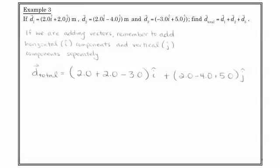So, in this case, my total displacement vector is 2 i-hat plus 2 i-hat minus 3 i-hat, and we kind of sandwich those together, 2 j-hat minus 4 j-hat plus 5 j-hat, and we sandwich those together. And so, in the end, my overall displacement vector is 1.0 i-hat plus 3.0 j-hat, and that's it. So, that's all you need to do.